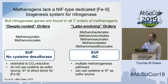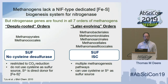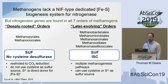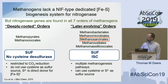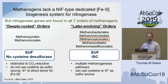The five later-evolving orders of methanogens also have those core suf proteins, and many also appear to have the core isc system as well. These are more metabolically flexible — some capable of multiple methanogenesis pathways — and several have been reported to grow on cysteine or sulfide as a sole sulfur source, or even more compounds than that. In our lab we mainly work with members of the genus Methanosarcina, order Methanosarcinales.